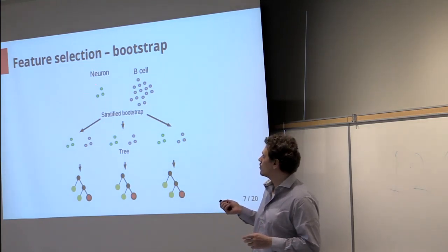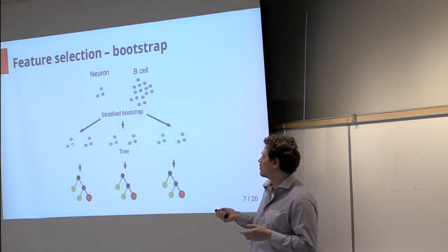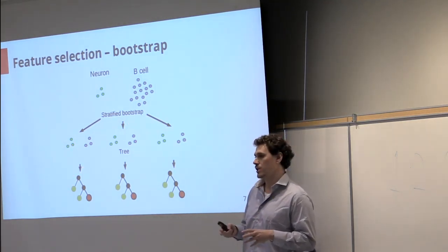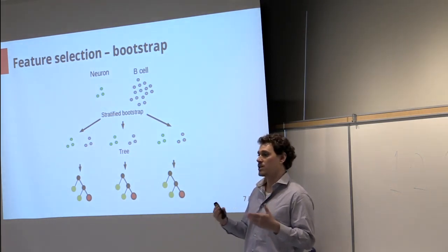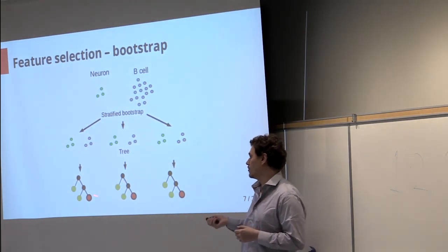...what we do to reduce the bias is to recreate each tree with a stratified bootstrap approach which selects the same number of samples from each class to create every single tree.